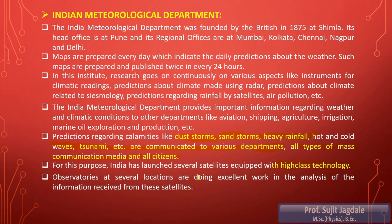Observatories situated at several locations are doing excellent work in analyzing the information received from the satellites. In the last lesson of class nine, you are going to study about observatories in depth — where they are situated and what work they do. So all those facts will be studied at that time. In this way, the Indian Meteorological Department is very crucial.